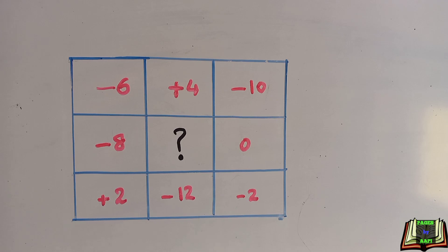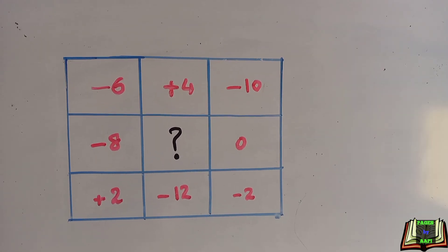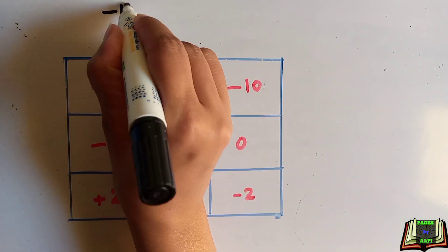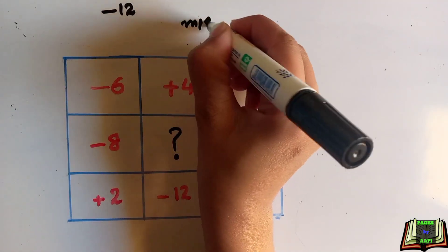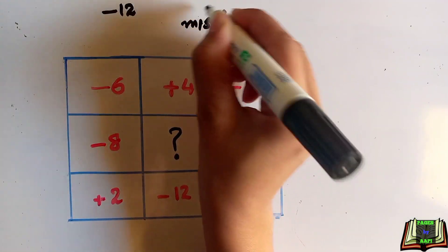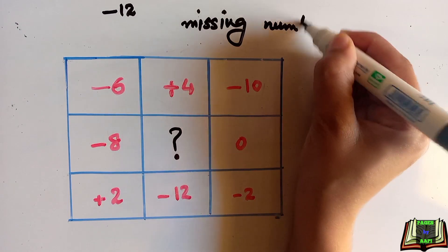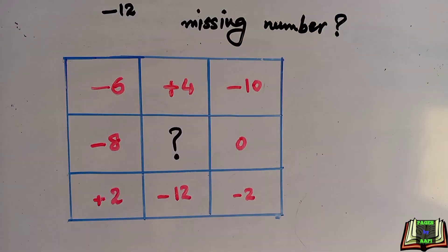In the first question, a few numbers are given and we have to find the unknown number. We know that in a magic square, each row, column, and diagonal adds up to the same number. In this question, each row, diagonal, and column adds up to minus 12 — so take care of the negative sign — and we have to find the missing number.